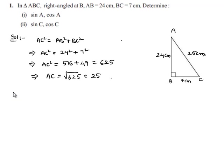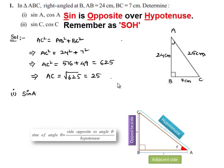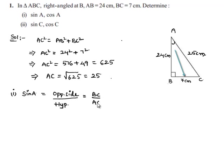Now, in the first part, we are asked to find the value of sin A. We know that sin of an angle is equal to opposite side by hypotenuse. The opposite side to angle A is BC and the hypotenuse is AC. So sin A = BC/AC = 7/25.